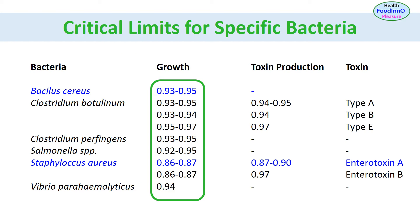Critical limits for specific bacteria or types within a group differ depending on their type. For example, Bacillus cereus cannot grow below a water activity of 0.93, and Staphylococcus aureus cannot grow below 0.86 and produces toxins within water activity of 0.87 to 0.90. This may be due to the diverse coping mechanisms adapted by different bacteria, which were covered in the earlier video on water activity and osmotic stress.